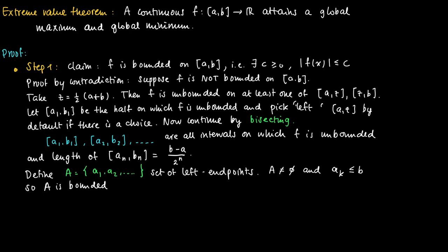We have a non-empty set that is bounded. So by the completeness axiom of the real numbers, α = sup(A) exists. Since f is continuous on the interval [a, b], f is in particular continuous at α. The supremum of A is of course contained in [a, b], so f is continuous at α.